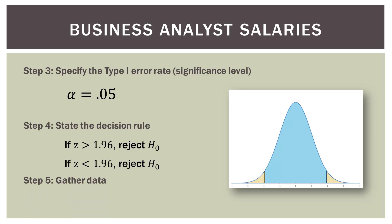Step five: gather the data. We went ahead and gathered our data, so our sample size is 112 and our sample mean was $72,180. We know that it's higher than the hypothesized mean, but the question is — is it high enough to be statistically significant?